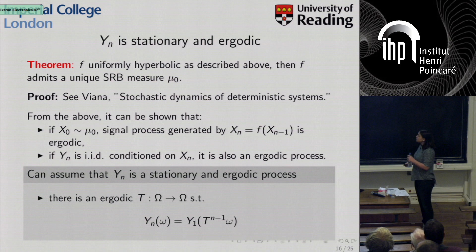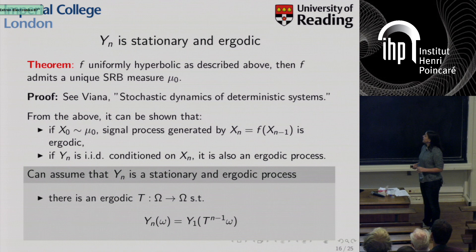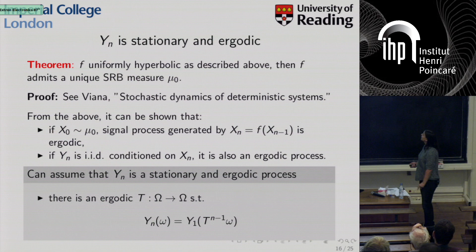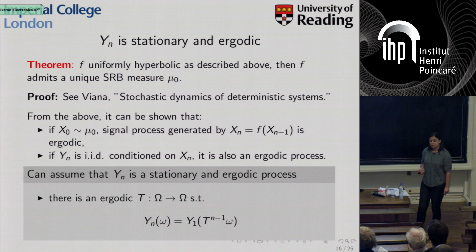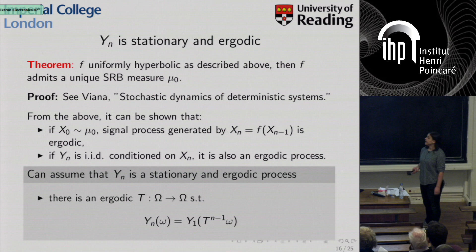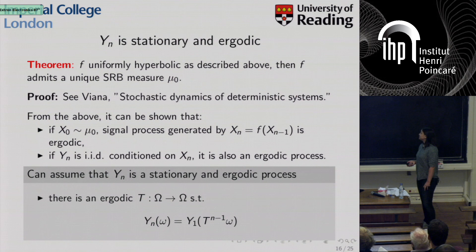Before stating the main result, I want to mention some important properties of Y_N that follow from our assumptions. For uniformly hyperbolic F, there is a well-known result that F admits a unique SRB or physical measure — a nice proof can be found in Vianna's paper 'Stochastic Dynamics of Deterministic Systems.' From this, if X_0 has distribution mu_0, the signal process generated by F is ergodic. Since Y_N is IID conditioned on X_N per our assumptions, it is also an ergodic process, and in particular Y_N can be expressed in terms of Y_1 via iteration of an ergodic map.